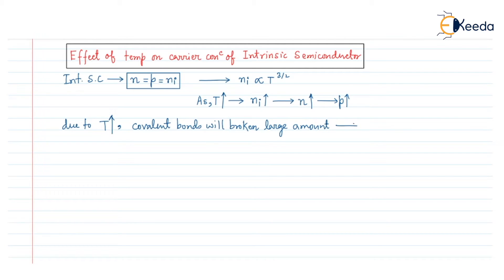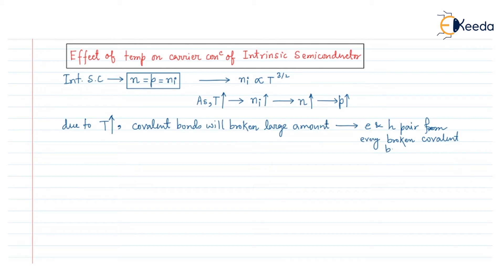From every broken covalent bond, we get an electron-hole pair. That is why the concentration of electrons will be raised and the hole concentration will also be raised. So the electron and hole concentrations are both increased due to the temperature increment.